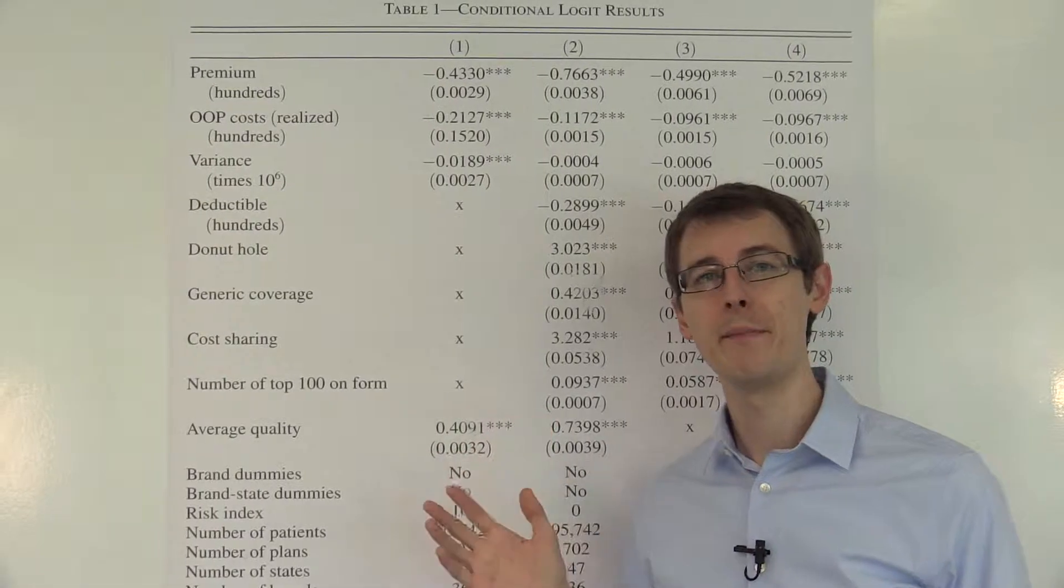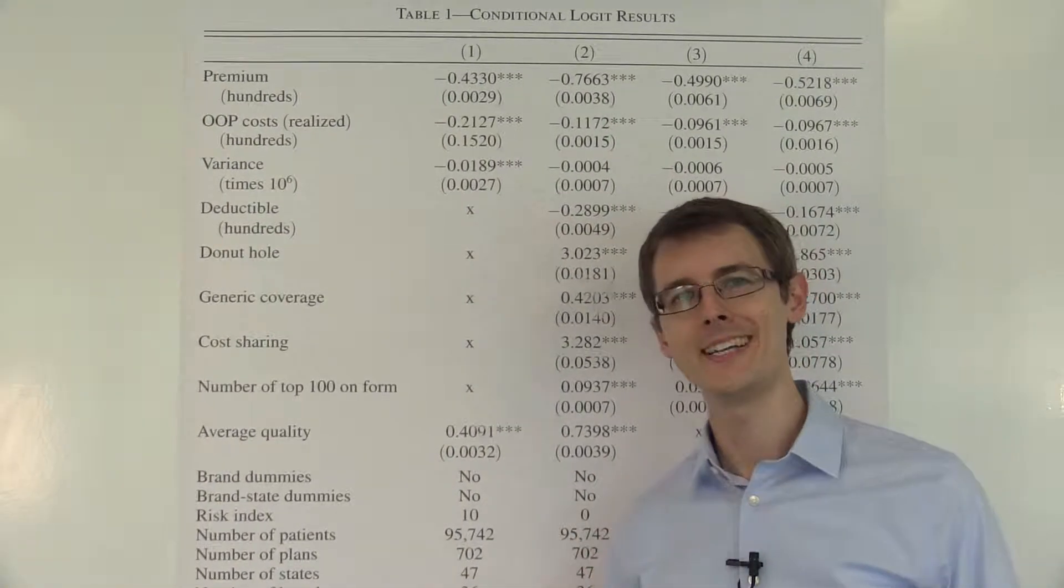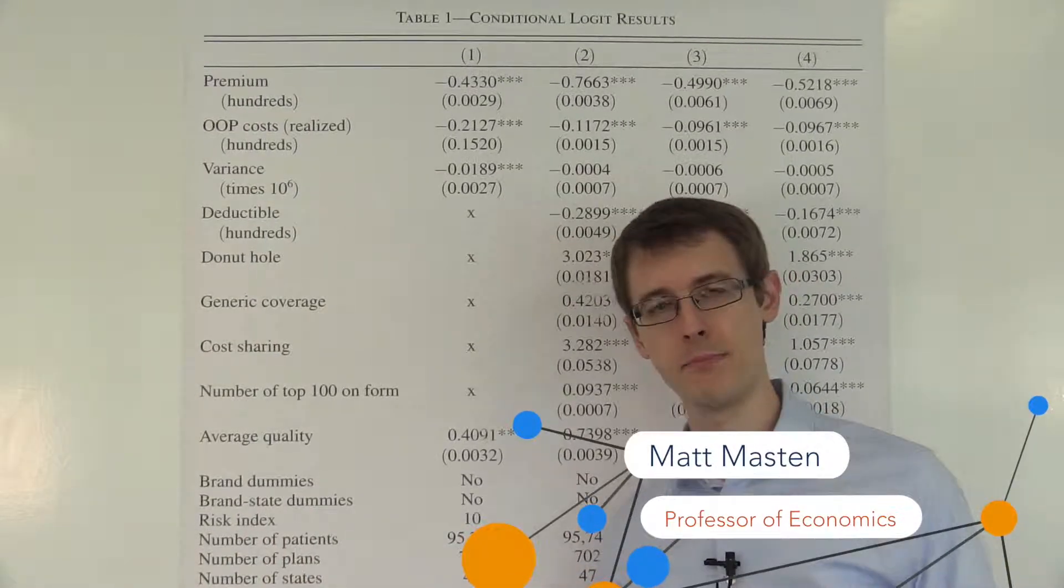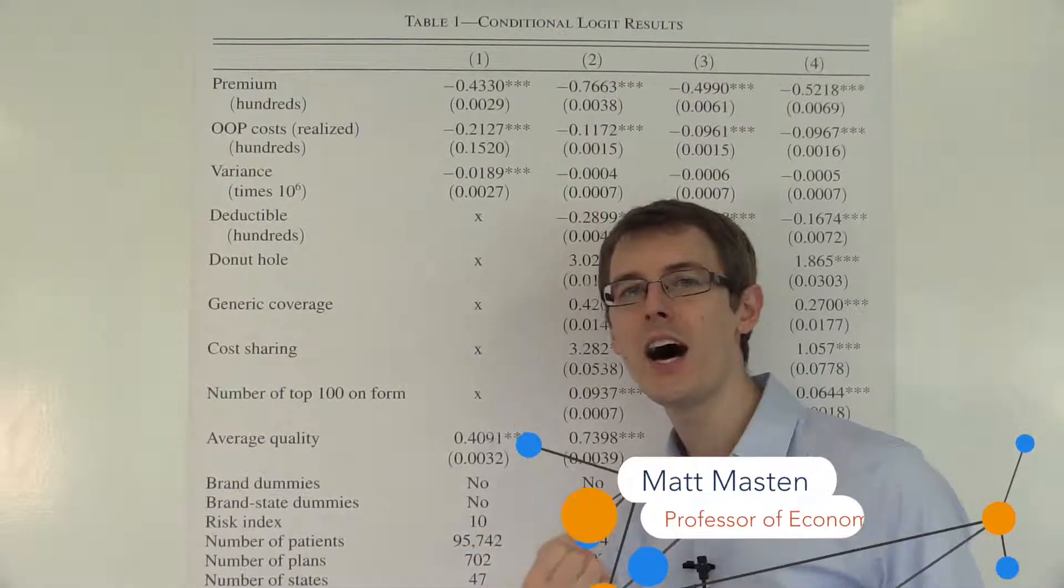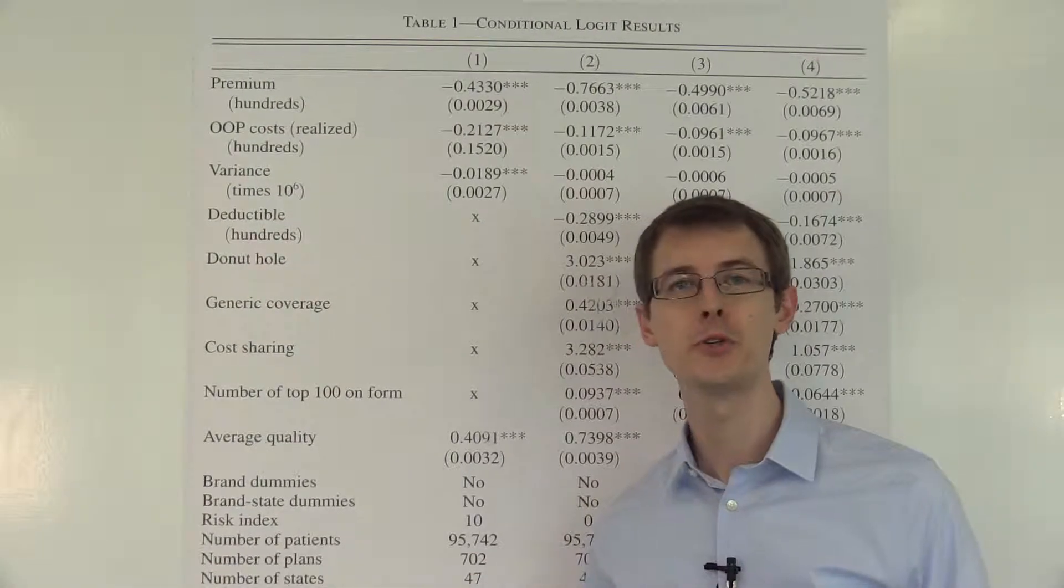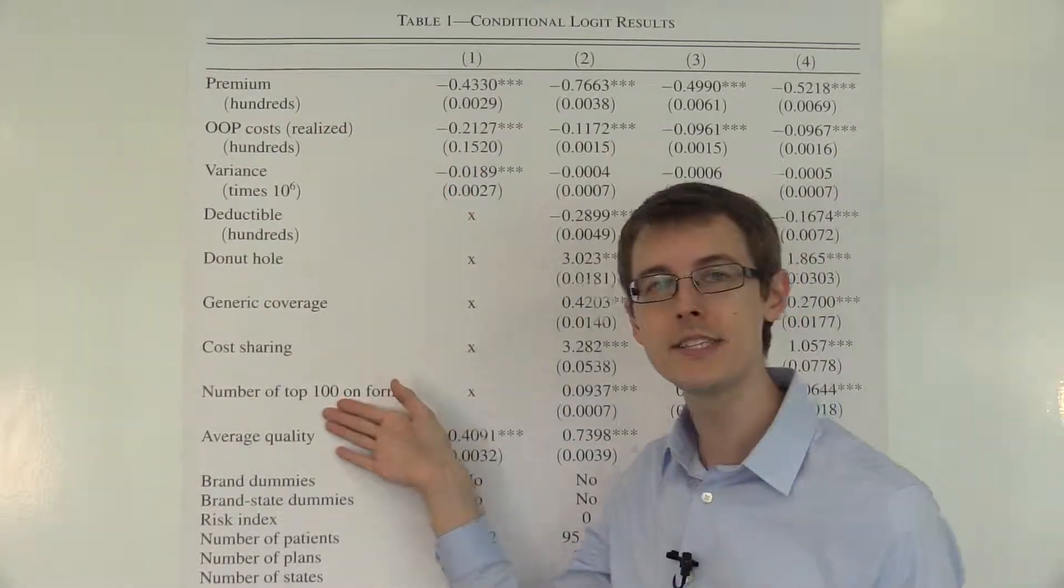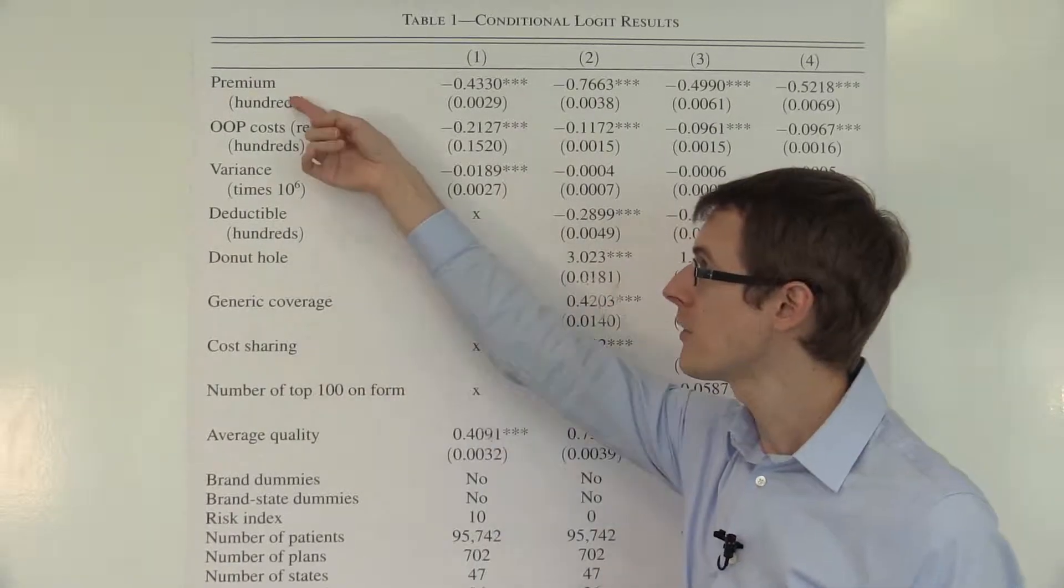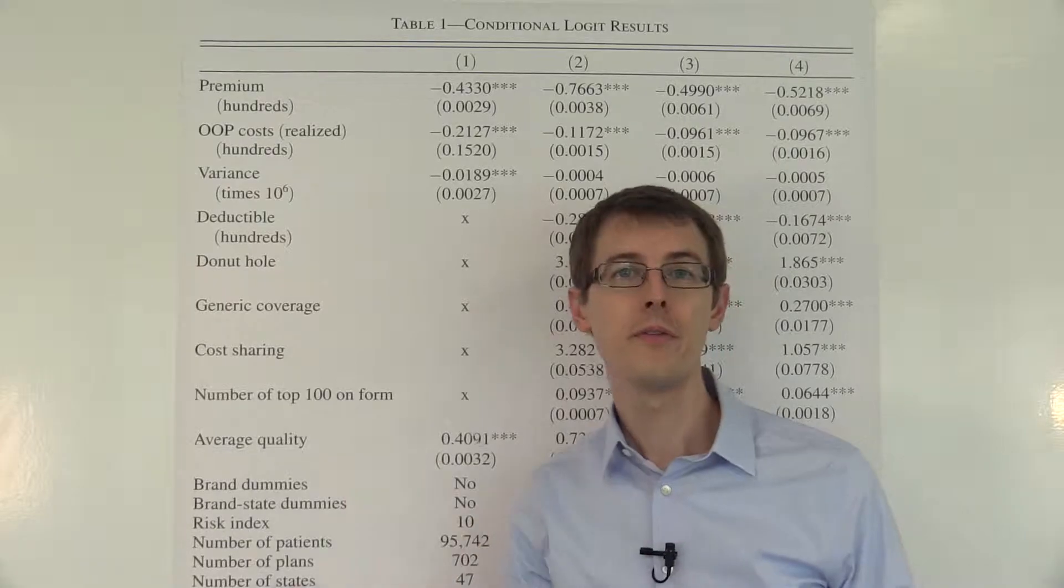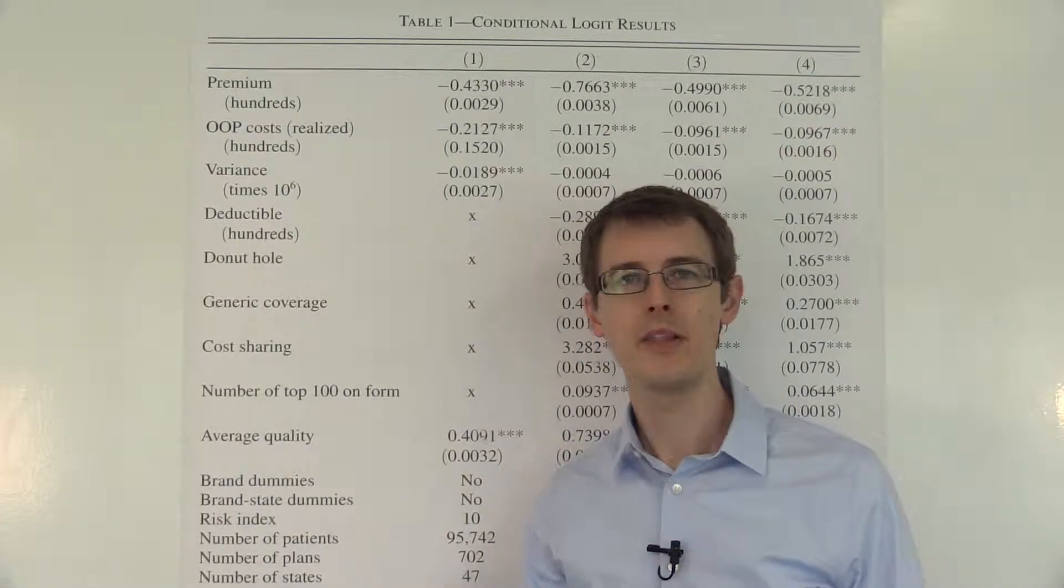Here I've got the main results from the Abeluk and Gruber paper. Remember our context: we've got senior citizens choosing among different health insurance plans, and we want to recover their preferences for different characteristics of those plans. Well, here I've got a list of those characteristics. For example, the premium - how much are you going to pay each year to be covered, just to be covered by this plan?